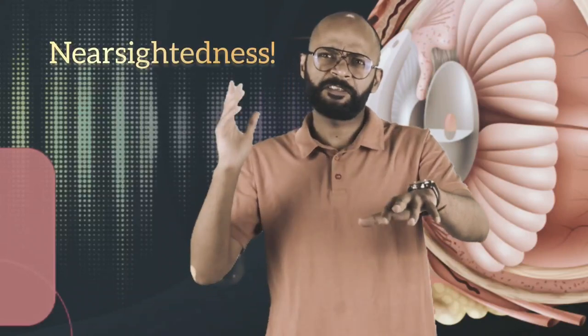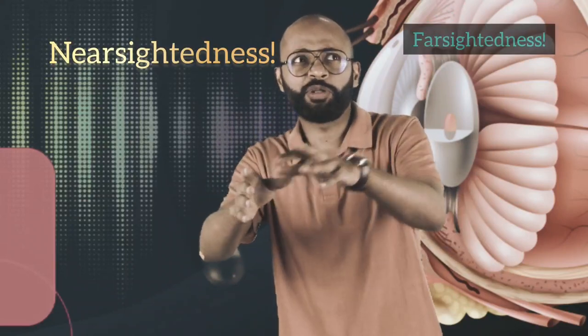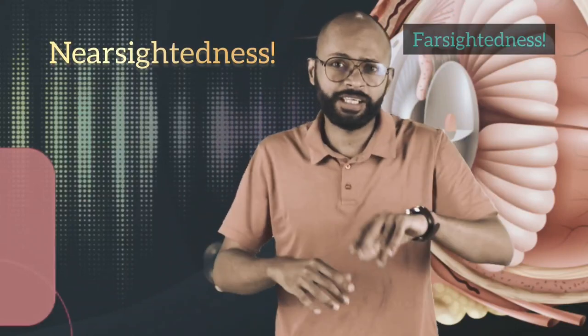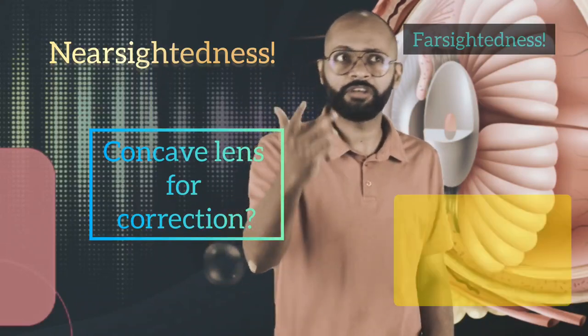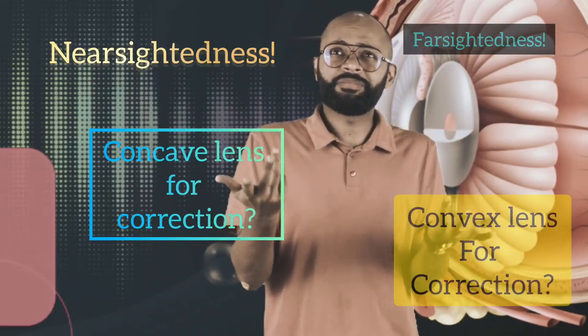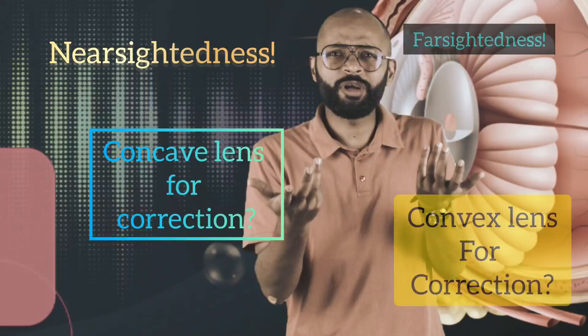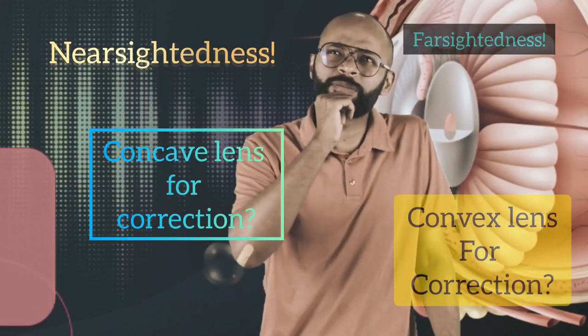Myopia, hypermetropia, so confusing. Something is short-sightedness, something is long-sightedness. In some the near point moves far, in some the far point comes close. Some use concave lens, something uses convex lens for correction. In some cases the eyeball becomes short, in some case eyeball becomes long. I'm tired of cramming all these things. I wish there was a shorter and simpler way that both of these things become very clear to me.